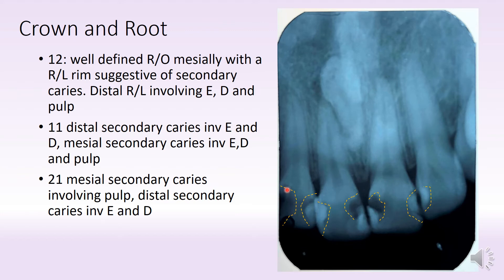You have a well-defined radiolucency mesially with a radiolucent rim suggestive of secondary caries. Distally there's a large radiolucency involving enamel, dentine and pulp, so this tooth is pulpally involved with secondary caries. Moving on to 1-1, there is a distal secondary caries similar in description.